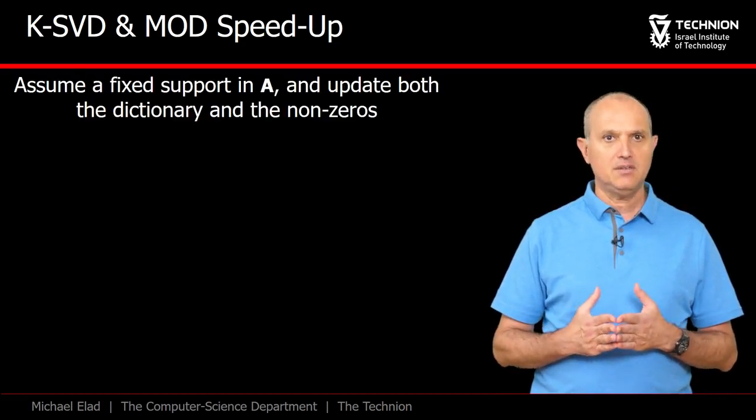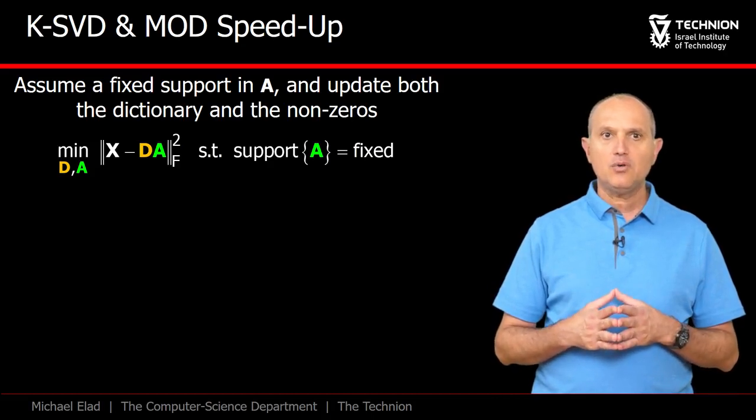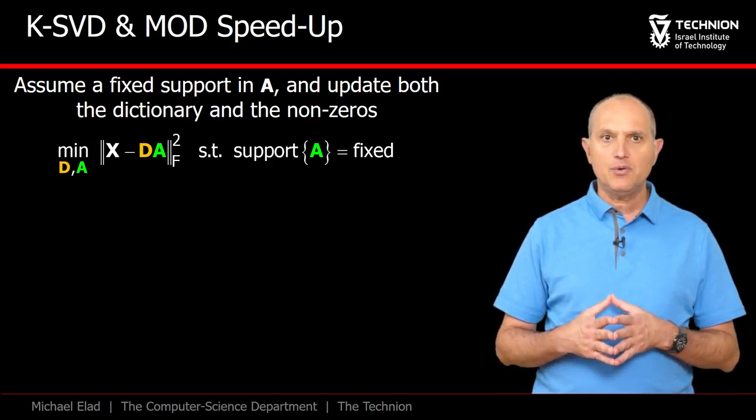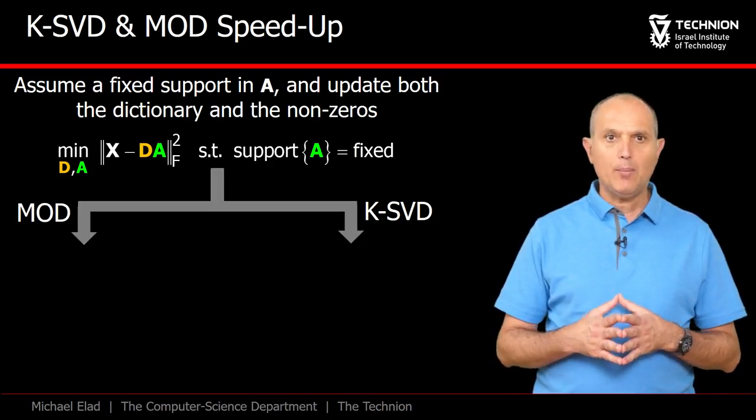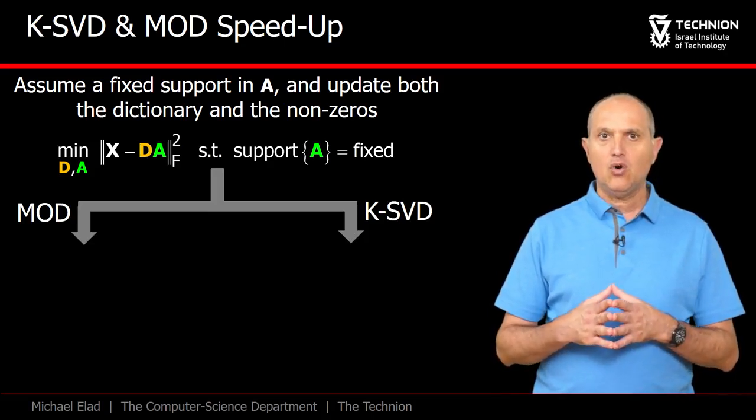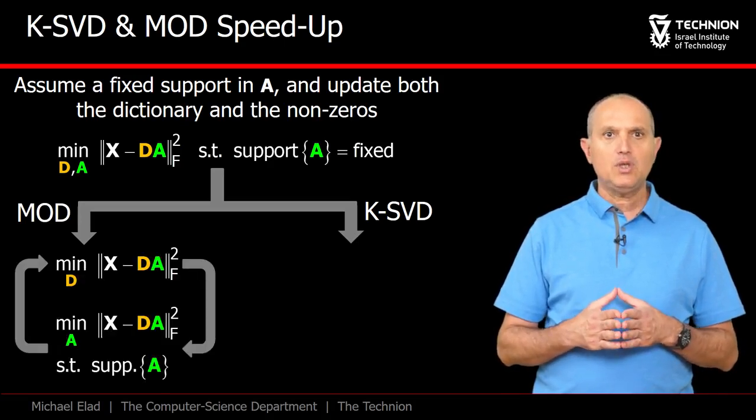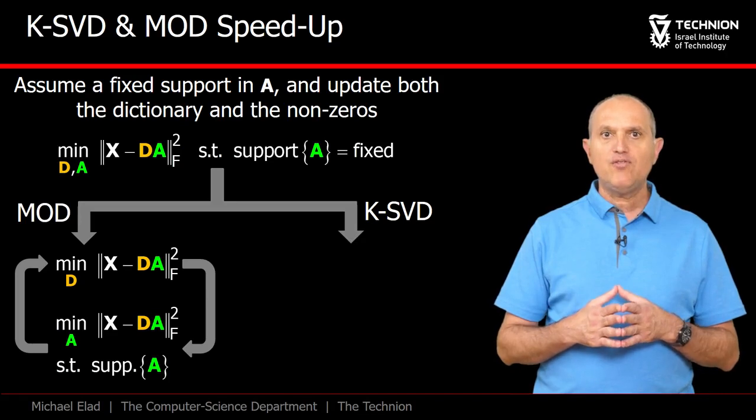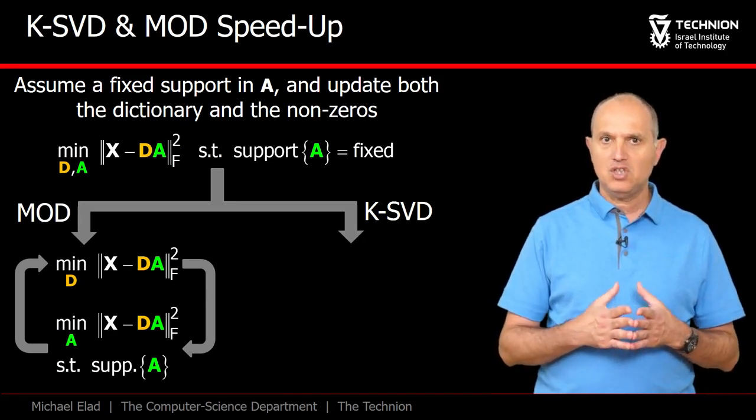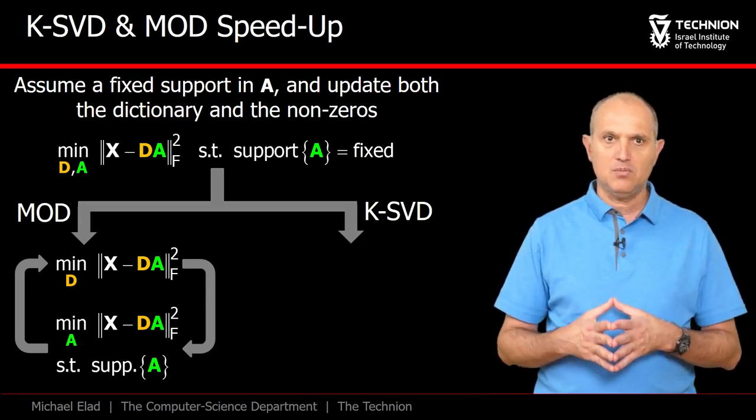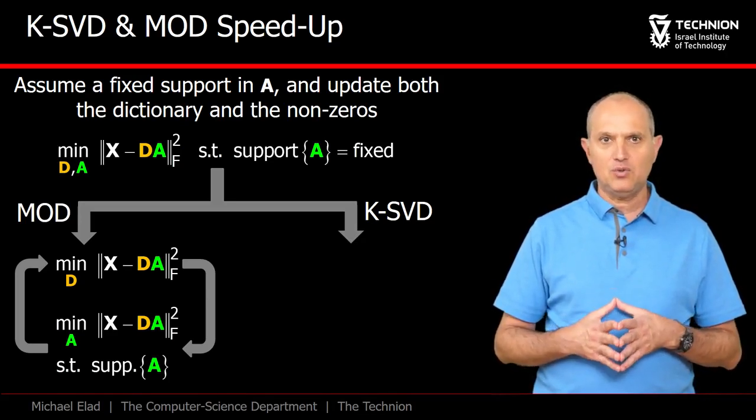Once A has been updated, our problem is defined as updating the dictionary D and the non-zero elements in A while keeping the zeros intact. So how should this be done? We have two options, MOD or KSVD-style solutions. In the MOD option, we should update D as we have already shown, but this should be followed by a similar update of the non-zeroes in A. This is a least squares problem that is easily manageable. Of course, we have to apply several rounds of these two steps.